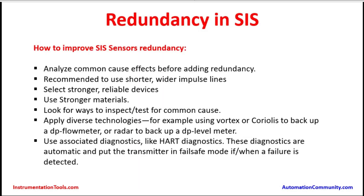How to improve SIS sensor redundancy: First, analyze common cause effects before adding redundancy. As discussed, if impulse line plugging occurs on a common line, it may impact both transmitters. In that case, two independent impulse lines are needed. Based on applicability, requirement, and process conditions, the design has to be improved. It is also recommended to use shorter, wider impulse lines of the required diameter — otherwise there could be plugging inside the impulse line and the process may not reach the sensor to give a proper reading.